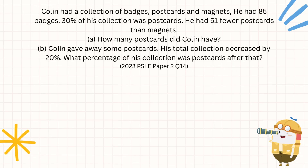For this question, we're going to be looking at our percentage change question based on the 2023 PSL paper, question 14. Colin had a collection of badges, postcards, and magnets. He had 85 badges, 30% of his collection was postcards, and he has 51 fewer postcards than magnets.